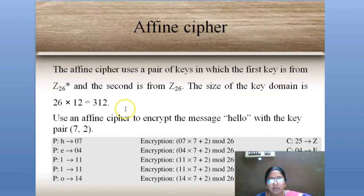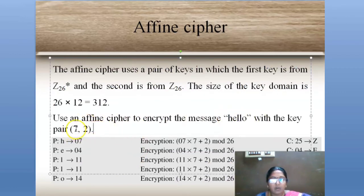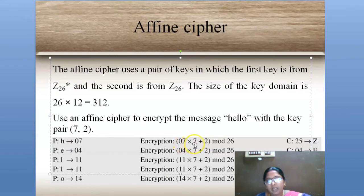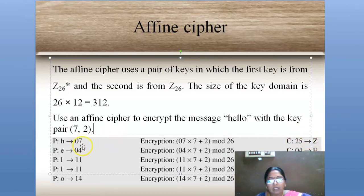Here is the example of affine cipher. The word is 'hello' with a pair of keys: K1 = 7 and K2 = 2. For H with value 7: (7 × 7) + 2 = 49 + 2 = 51, then 51 mod 26 = 25. The letter at position 25 is Z. Applying this method to all letters of 'hello,' the ciphertext is Z-E-B-B-W.